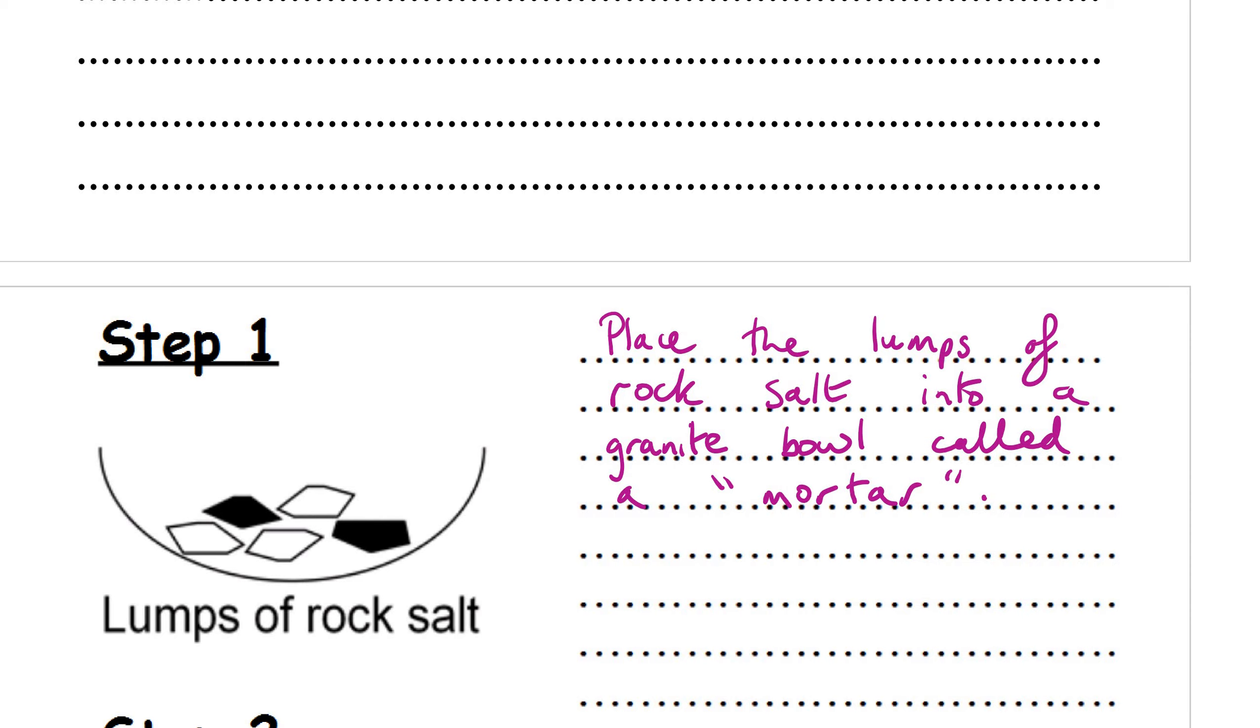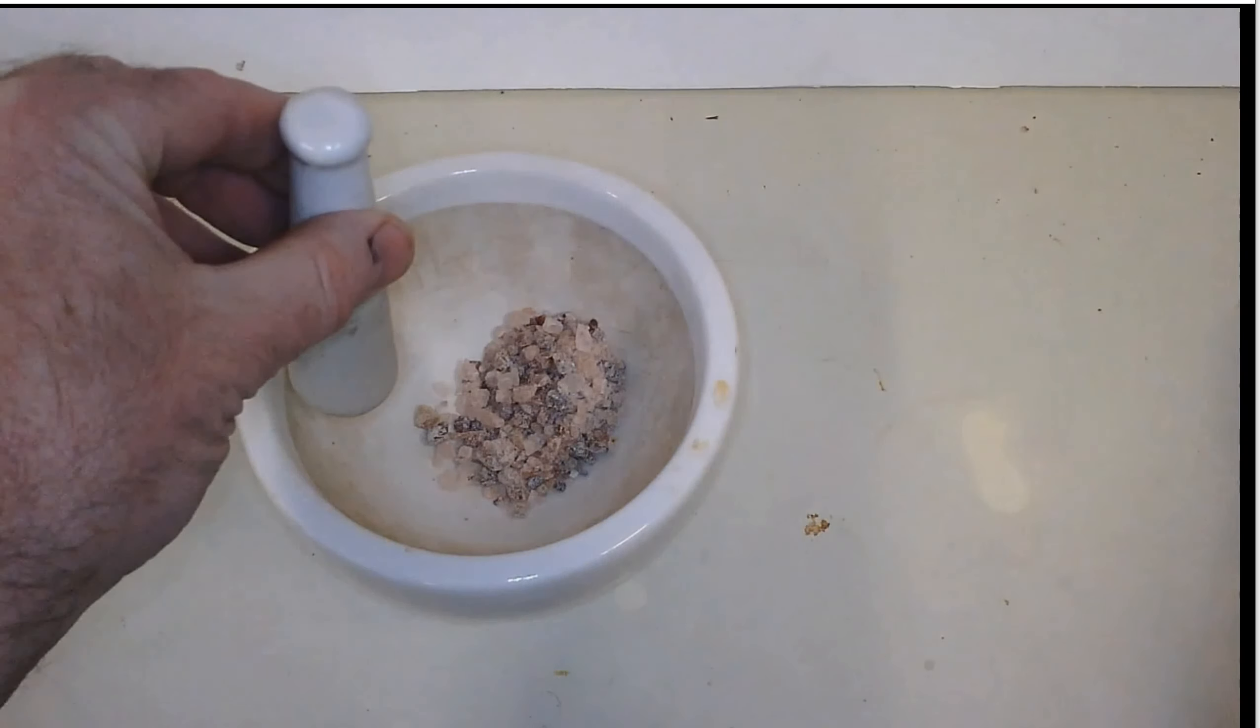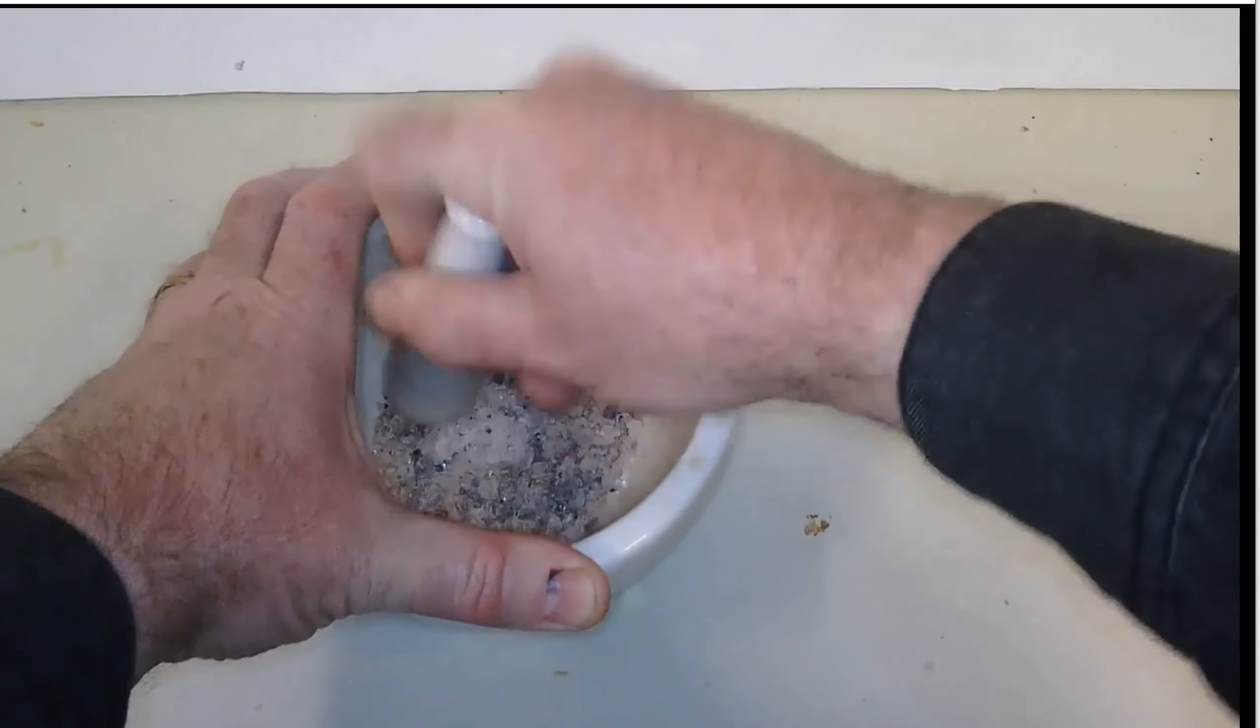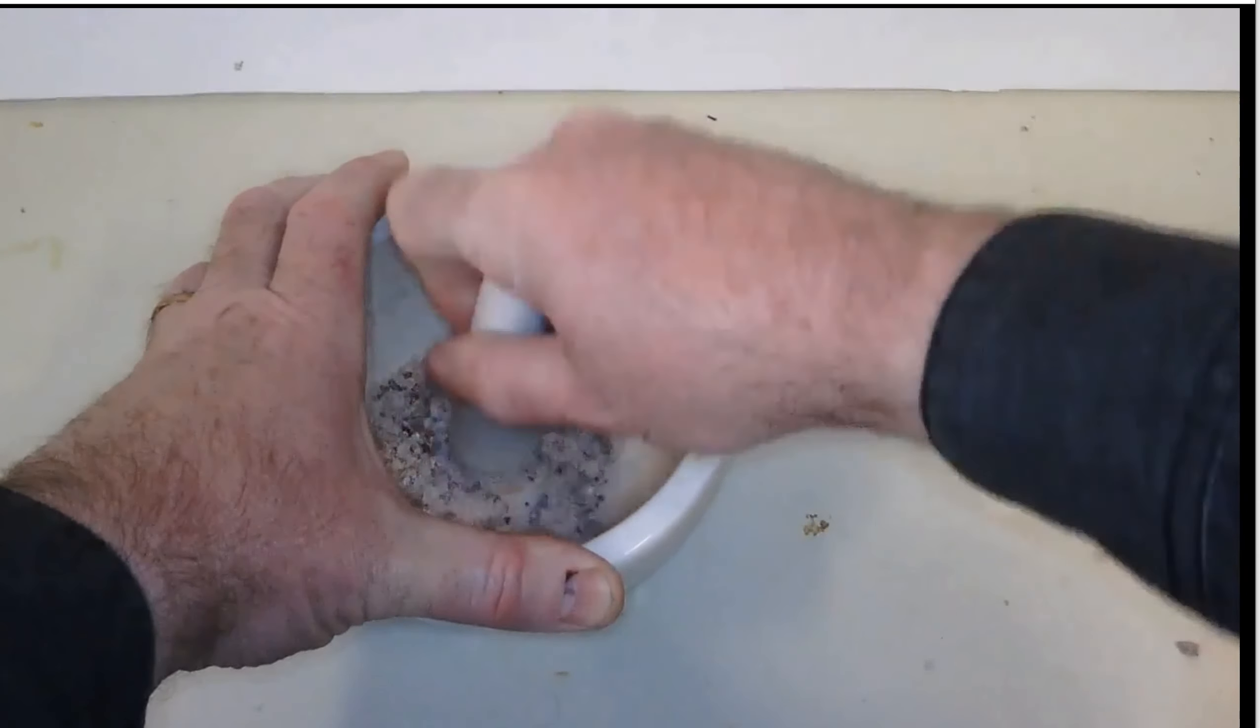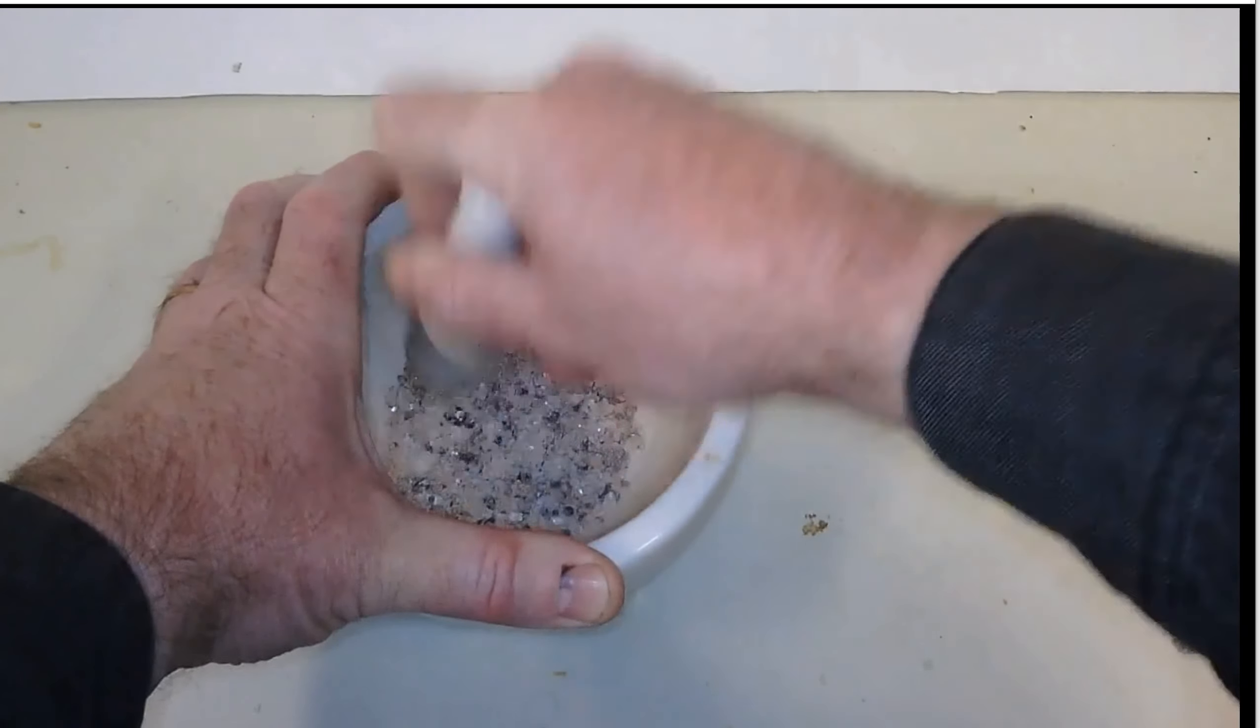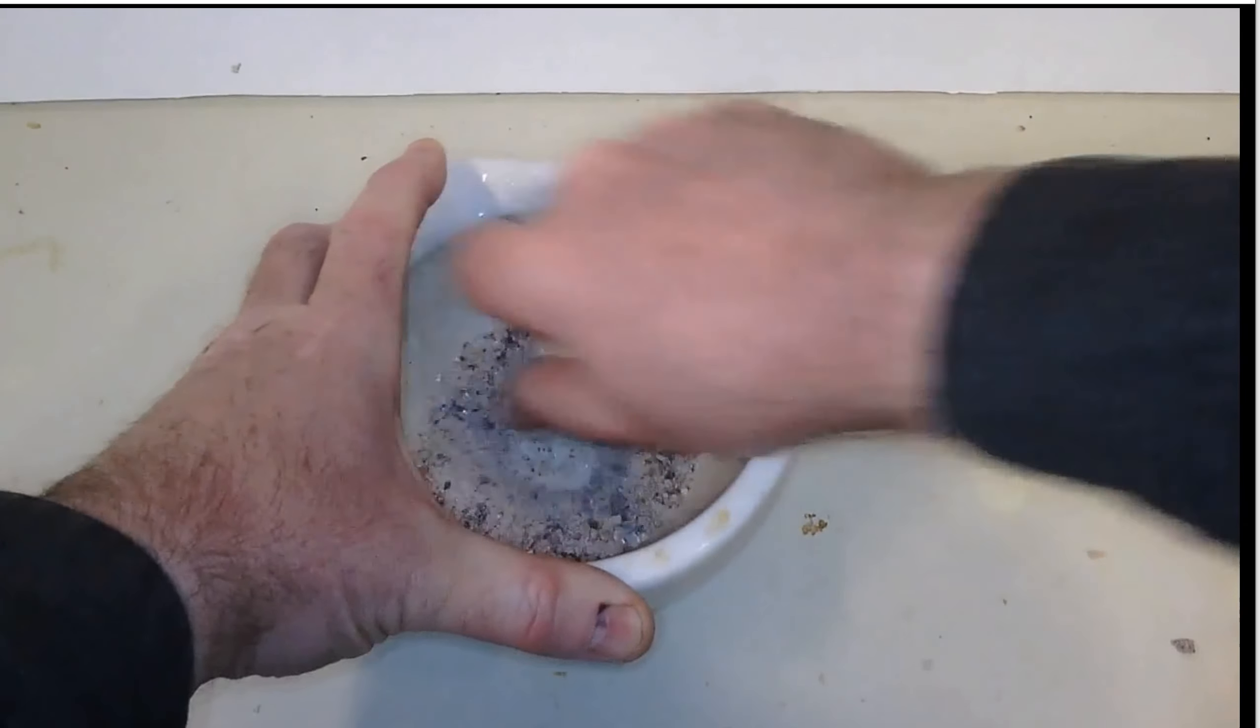Step one, we're going to place lumps of rock salt into a granite bowl called a mortar. And the mortar is this bowl here. Step one, let's have a look at the video at the same time. There you go, and we're starting to bash it up, grind it up. This is excellent. The object in his right hand is called a pestle. The bowl is called the mortar.